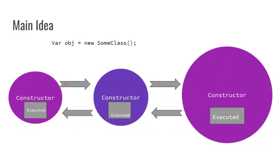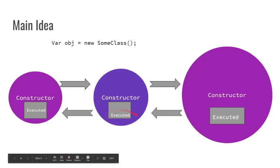After the second constructor body is executed, control is given back to the first constructor. This is how we chain constructors — one constructor calls another, which calls the third. After executing, the third gives control back to the second, and the second gives it back to the first. This is the main idea of constructor chaining, and we'll learn it with the help of a C# program.